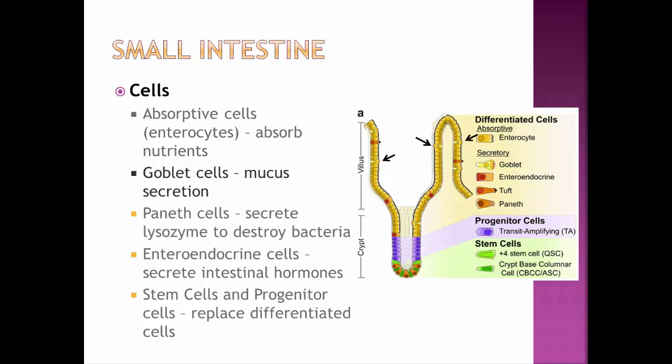Goblet cells secrete mucus to lubricate the food and reduce friction. In the duodenum particularly, goblet cells also secrete buffers — an alkaline solution to neutralize the acid coming from the stomach. This is necessary because the small intestine does not have the thick protective mucus layer that the stomach has.